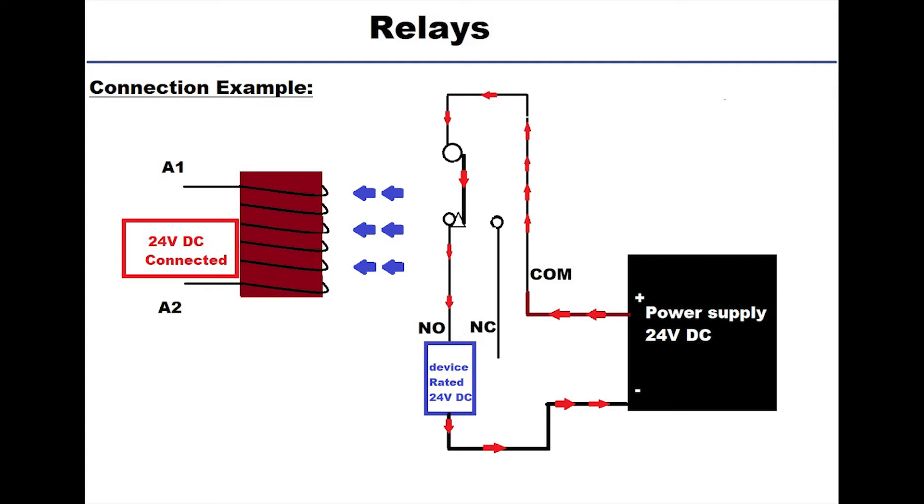Now once we energize this coil from the controller, the COM will be connected to the NO instead of the NC and the circuit around the device will be complete and the device will start operating. If we disconnect the coil, then the device will also disconnect.